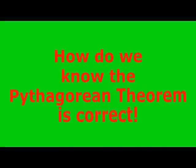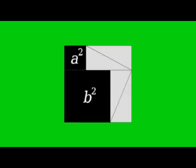The Pythagorean Theorem is a theorem, which means that someone has actually proved it is true. And since it has been around for a very long time, many different people have created various ways to show it exists. The one I like is this one. If you watch carefully, you can see that a squared plus b squared equals c squared. But let's take a closer look.